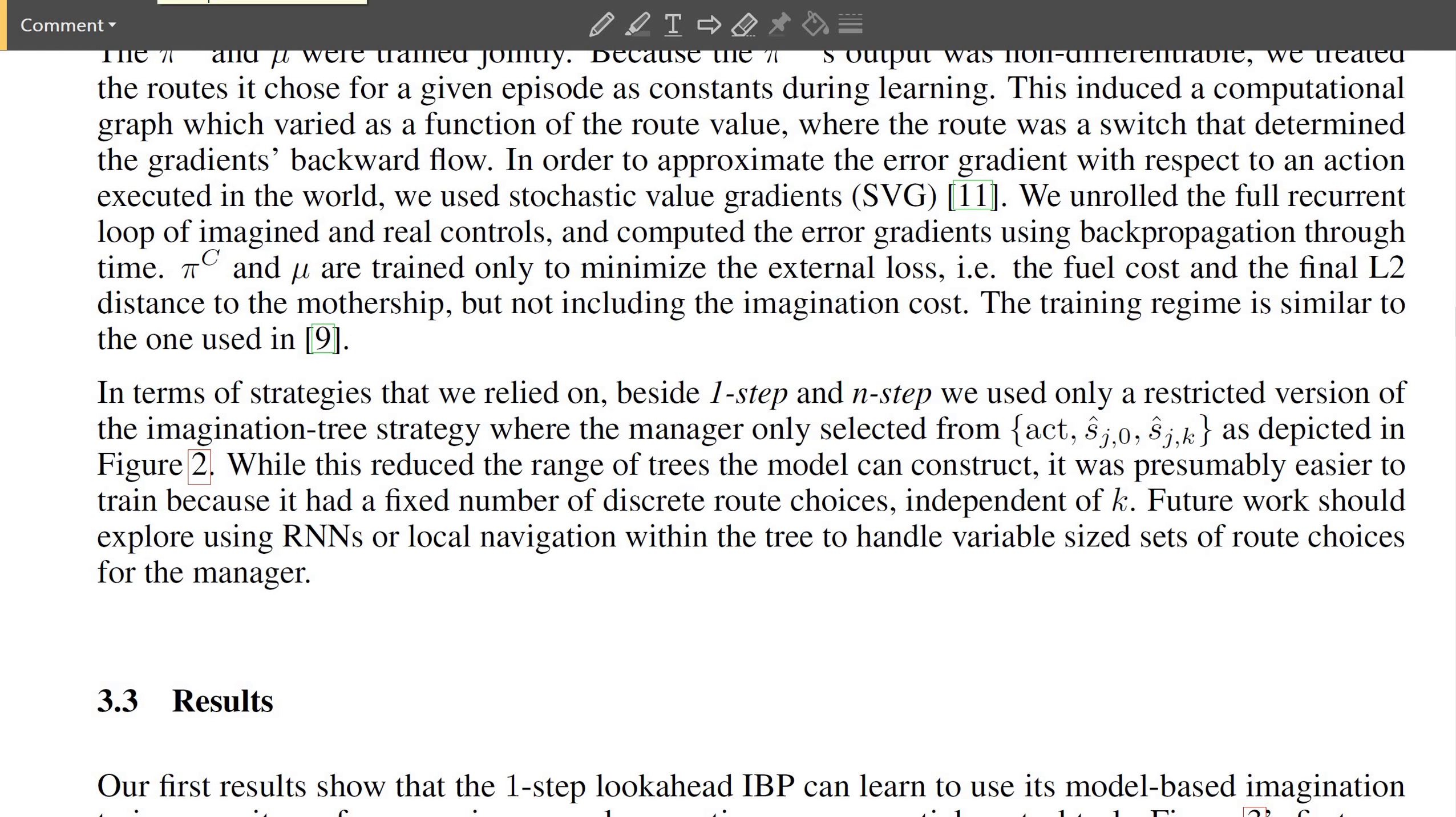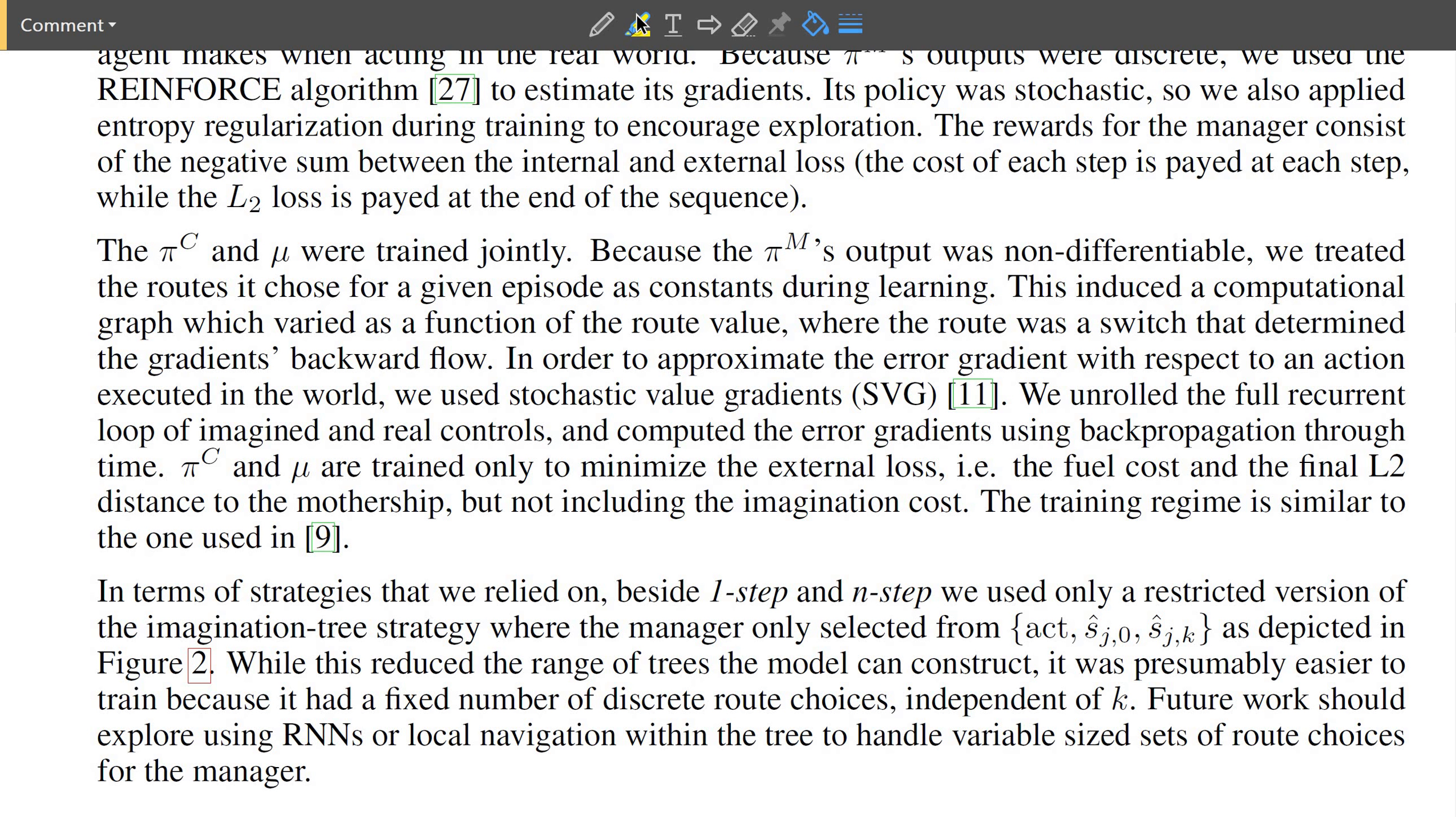The kind of thing that bugs me here is the fact that they didn't actually use the full imagination tree algorithm, but the manager only selected from act, sj0 which is the first imagined state, and sjk which is the last imagined state. So the manager can only choose between actually acting, then doing this one-step strategy and then doing this end-step strategy in each step. So it kind of limits the way it can plan, but I'm going to guess they did this because otherwise you couldn't have trained the model and it seems a pretty reasonable simplification to make in order to get this to work.